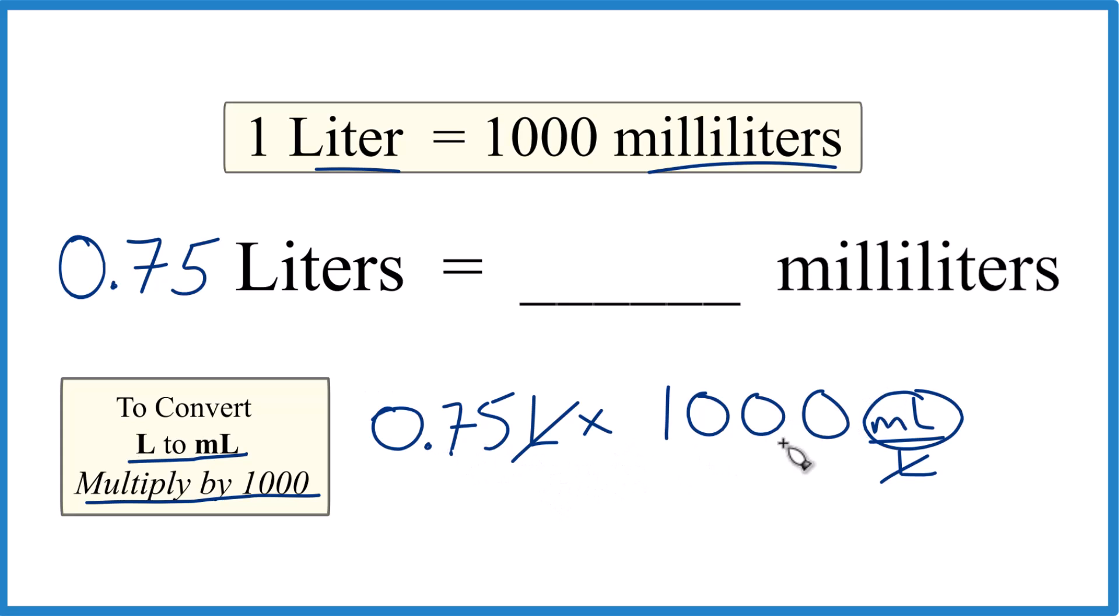So 0.75 times 1,000 milliliters, that equals 750 milliliters. So in answer to our question, 0.75 liters equals 750 milliliters.